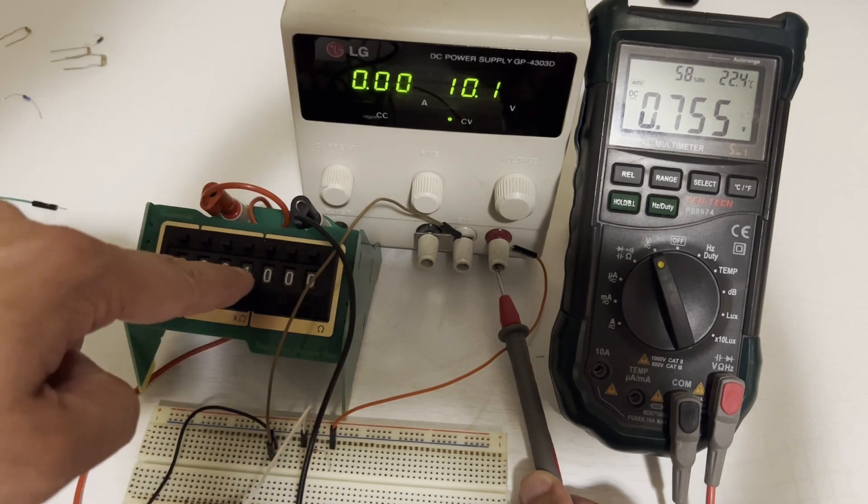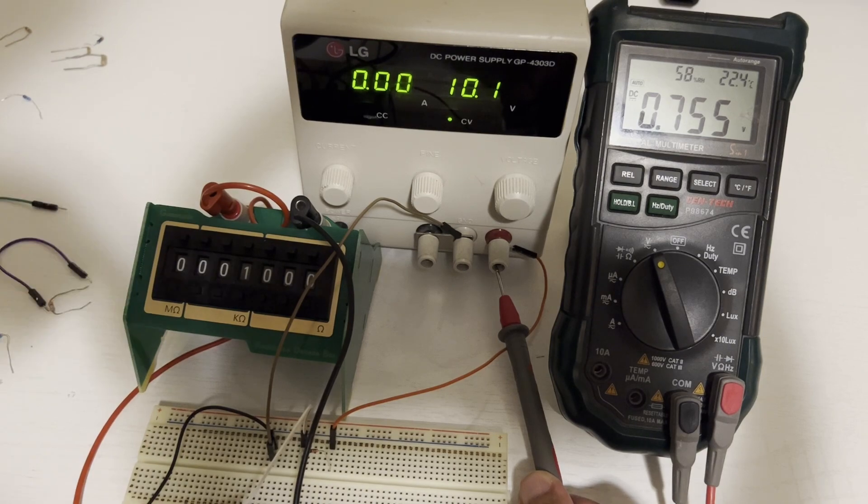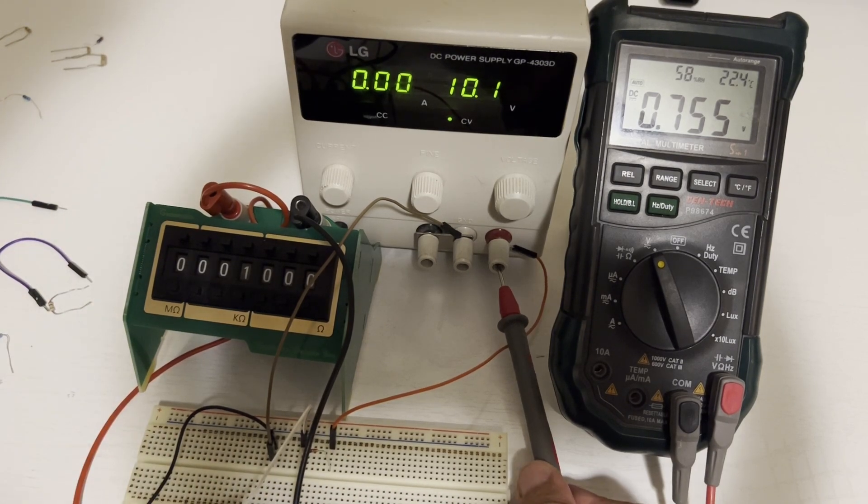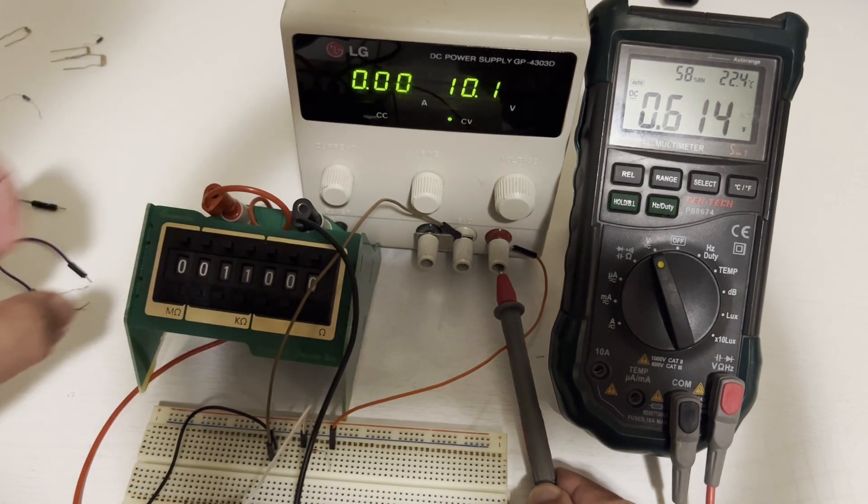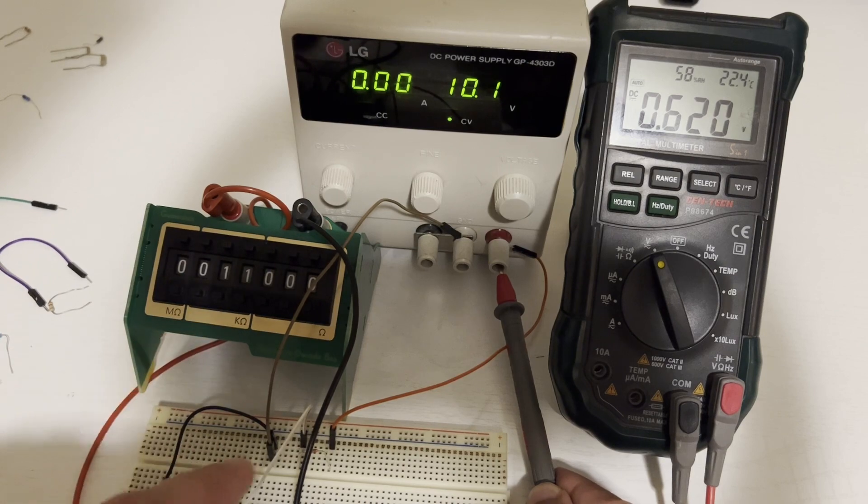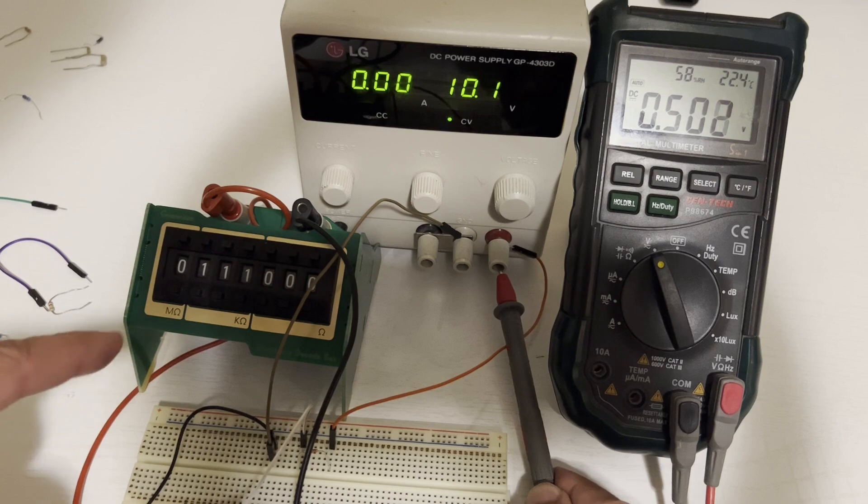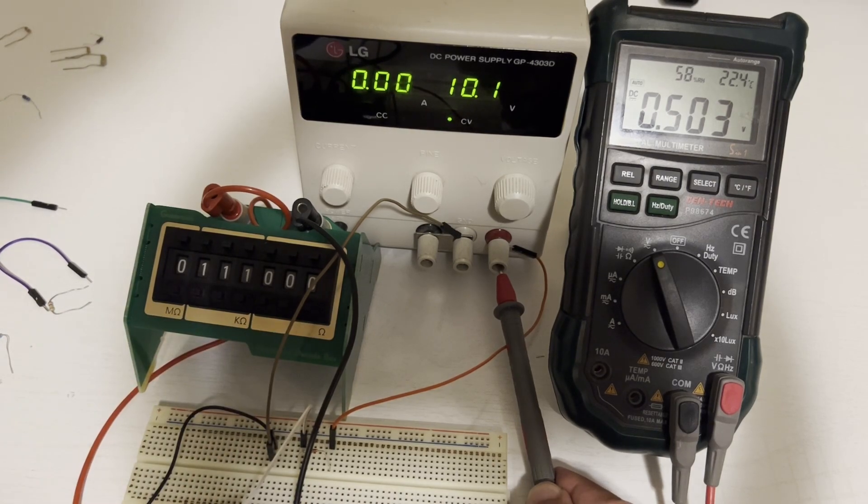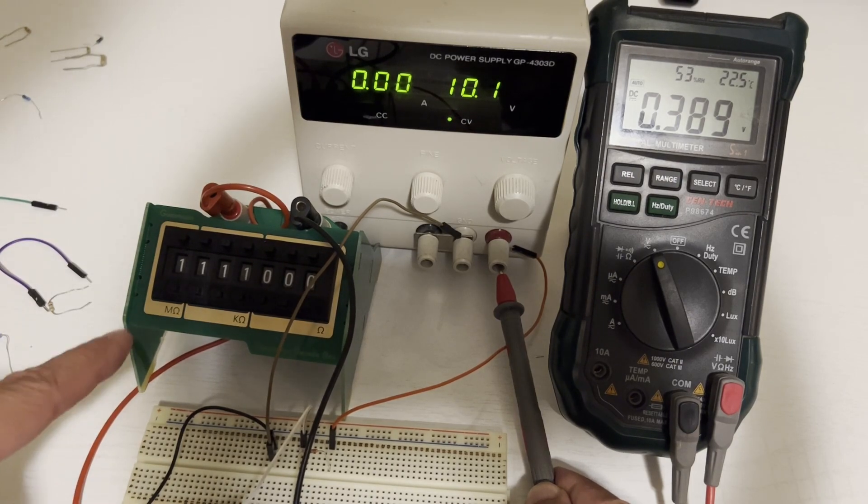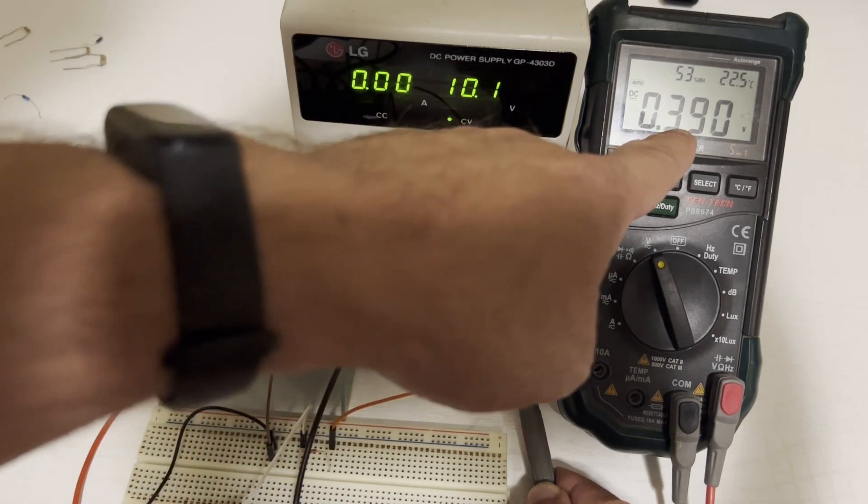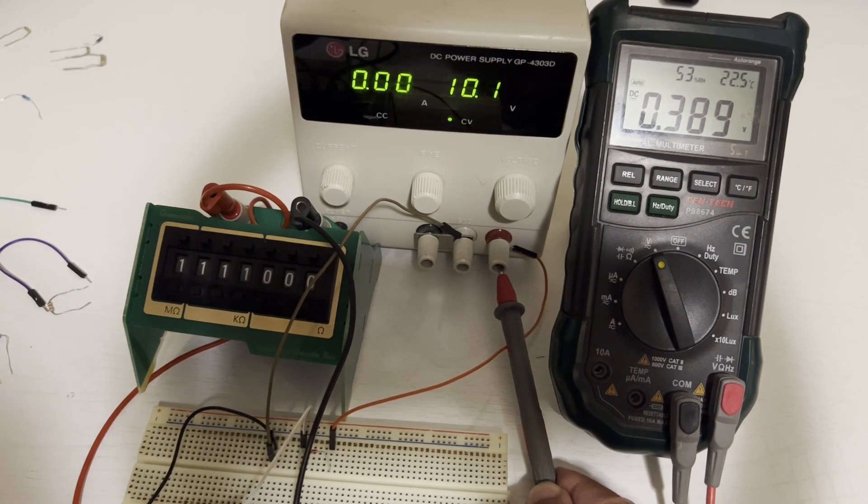This time we have a diode connected in series with a variable resistor. And we're measuring the voltage across the diode. So you can see with the 1k resistor we're at 0.75 volts. If I increase that to an 11k resistor we're at 0.62 volts. If I increase it to a 111k resistor we're at 0.5 volts. And if we increase it to a meg we're at 0.39 volts. So the diode gives us a voltage drop across a wide range of resistances.